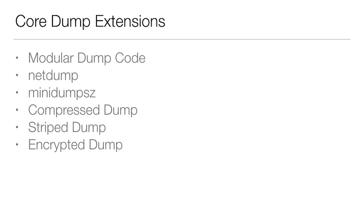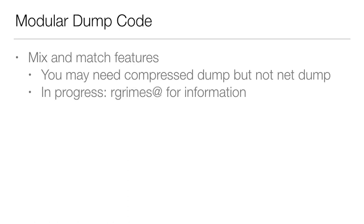There are several core dump extensions to cover: modular core dump, net dump, mini-dump sizing, compressed dump, stripe dump, and encrypted dump. The modular dump code, which Rod Grimes is working on, lets you mix and match these features — for example, compressed net dumps, or spanning dumps — which could also be useful for making kernels smaller on embedded systems.